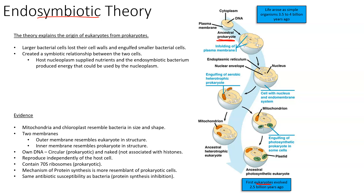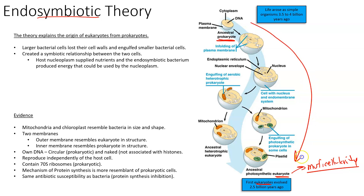Once eukaryotes arose, we can start to get more complex, leading to multicellularity, which is really important when we talk about how the first living multicellular organism came to be on the planet. We're going to focus on how this particular timeline progressed in order to get our first eukaryotes roughly 2.5 billion years ago.